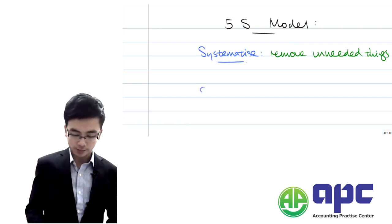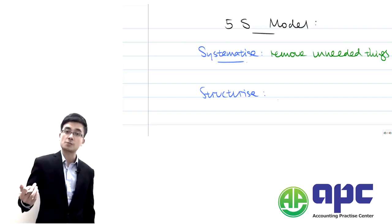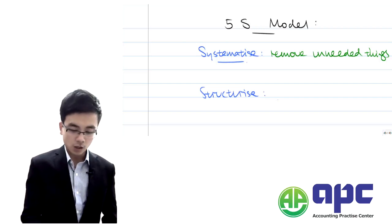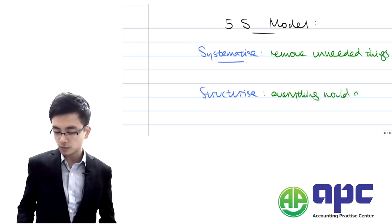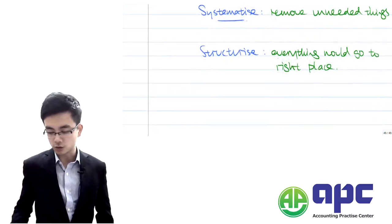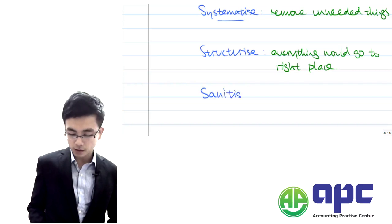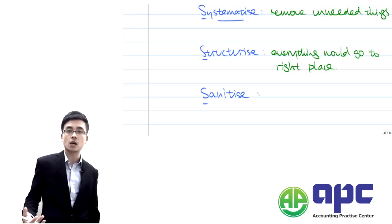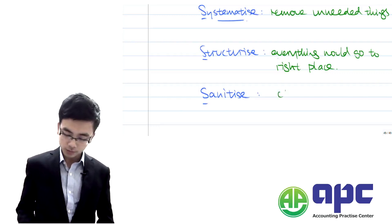The second S stands for Structurise — for example, we're going to put all pens into a pen container rather than spread over the table, making sure that everything goes to the right place. The third S stands for Sanitise, which means we're going to clean the table and clean the workplace when a job is performed. There's no point leaving the workplace as a mess — so clean the workplace.